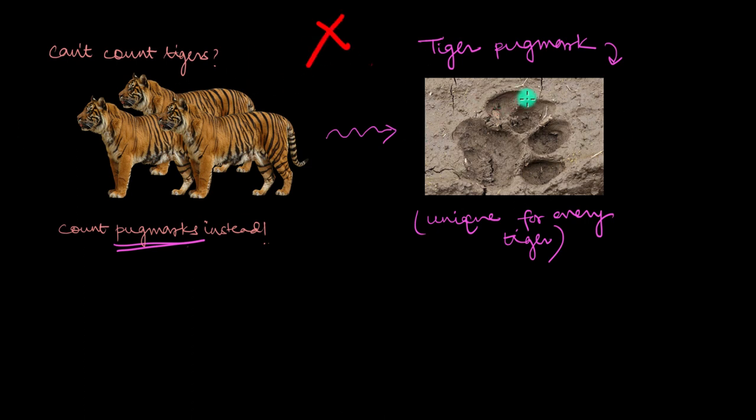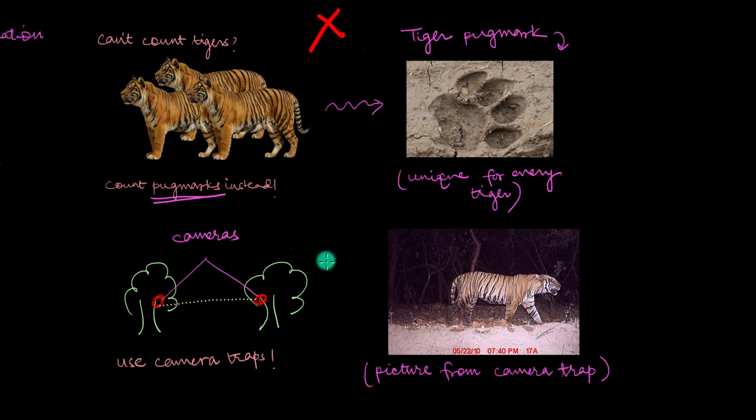Most of the time these paw prints would get trampled on or they would count the same print multiple times. So now tiger populations are estimated using something called camera traps. In this method, a pair of cameras are set up in a particular area and then they are left there for a few months.